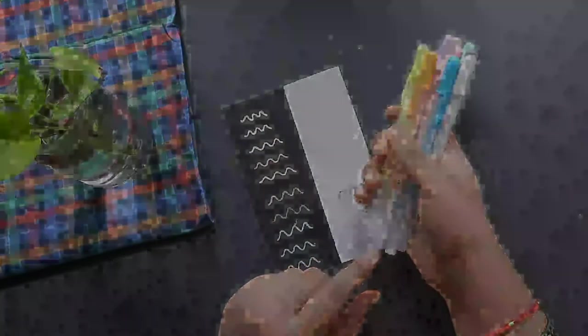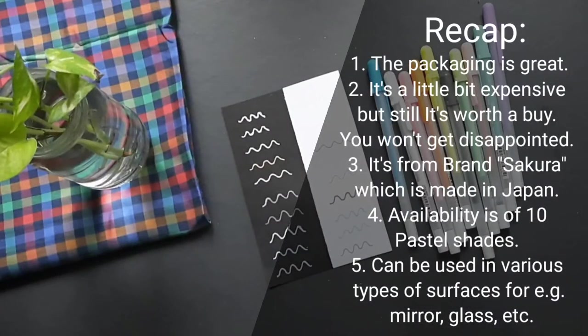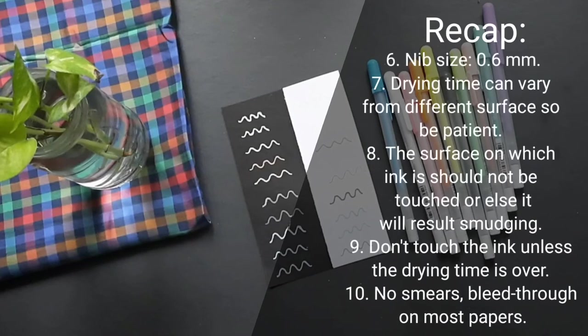Number one: the packaging is great. Number two: it's a little bit expensive but it's still worth a buy. Number three: it's from brand Sakura which is made in Japan product. Number four: its availability is of 10 pastel shades. Number five: it can be used in various types of surfaces, for example mirror, glass, paper, etc. Number six: the nib size is of 0.6mm. Number seven: drying time can vary from different surfaces so please be patient. Number eight: the surface on which ink is should not be touched or else it will result in smudging. Number nine: don't touch the ink unless the drying time is over. Number 10: no smears, bleed through on most papers. Please take care of the following points for the best results.